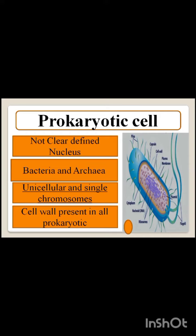Prokaryotic cells are unicellular and a single chromosome is present. Cell wall is present in all prokaryotes. If you have any questions, let me know in the comment section. Thank you.